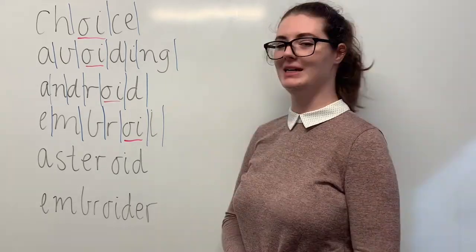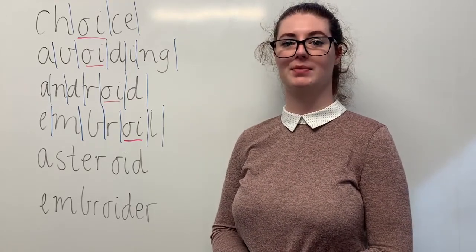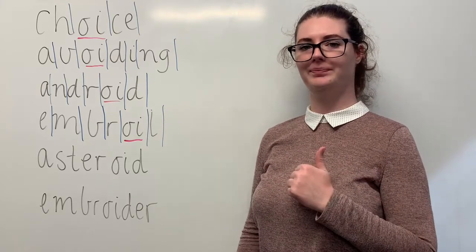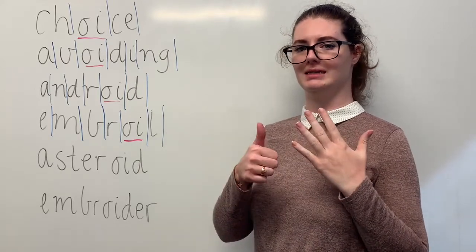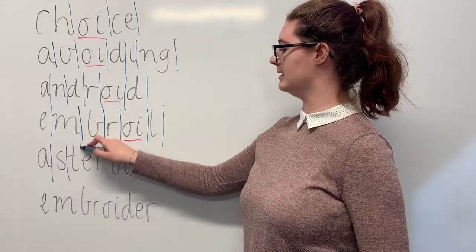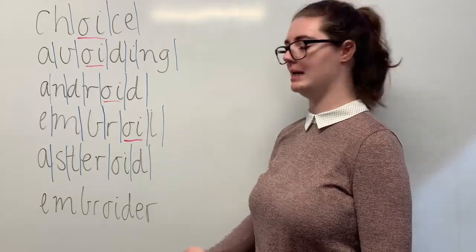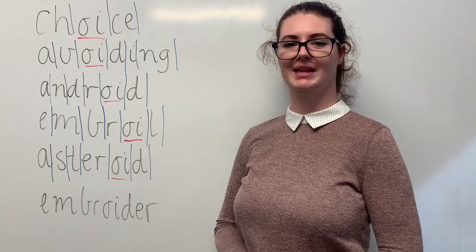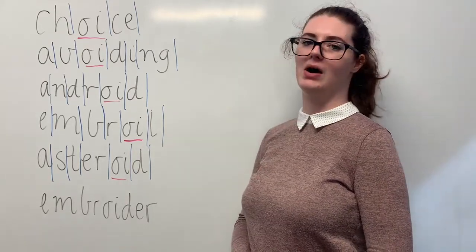Our next word is asteroid. When at the planetarium and looking through a telescope, I could see the asteroid in space. The sounds in asteroid are, together, a, s, t, r, oi, d. The letters in asteroid are a, s, t, e, r, oi, d. The part we need to remember is the oi digraph making the oi sound. Can you teach it to me? Asteroid: a, s, t, e, r, o, i, d.